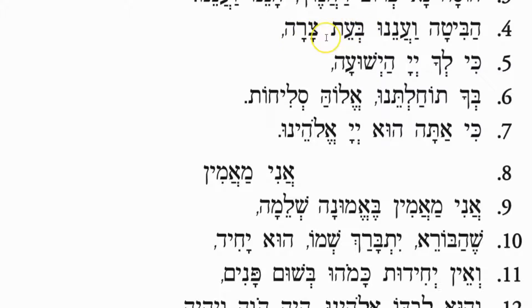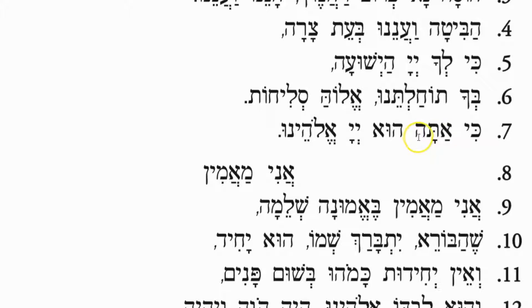At our time of distress. Number five: Ki l'cha Adonai — because to you, O Lord, is the salvation. God is the only one that can save us. Number six: Becha tokaltenu Eloha Slichot. Number seven: Ki atah Adonai Elohenu — because you are the Lord our God.